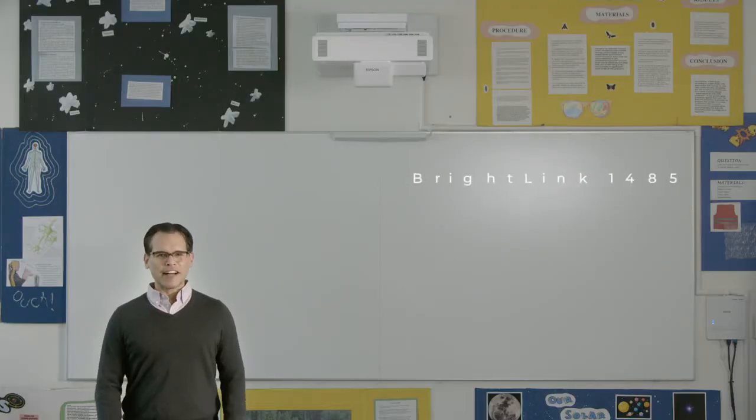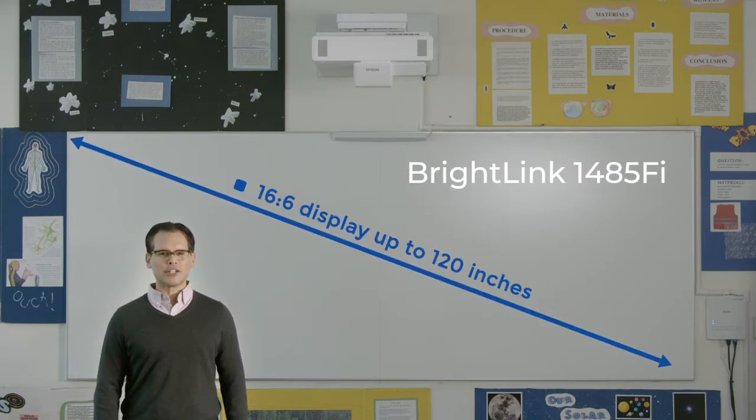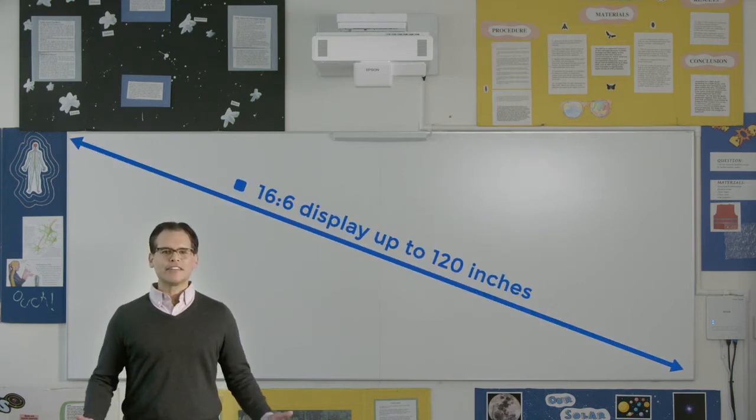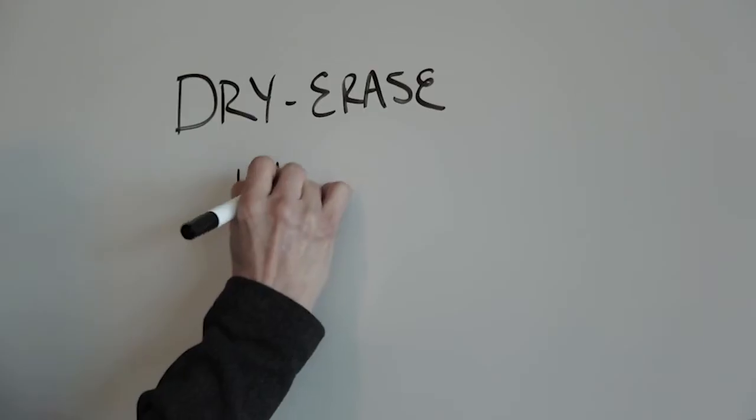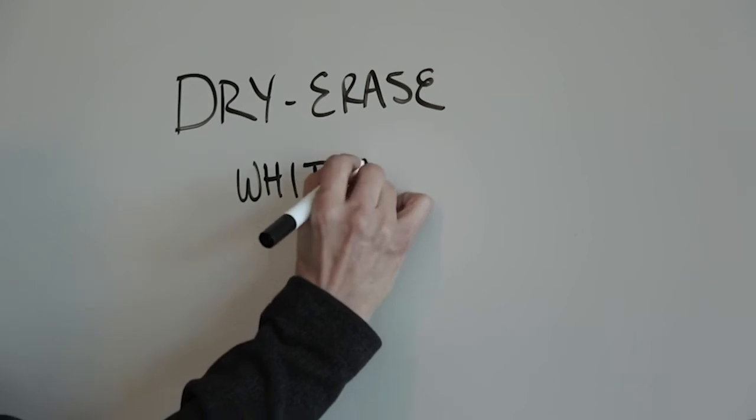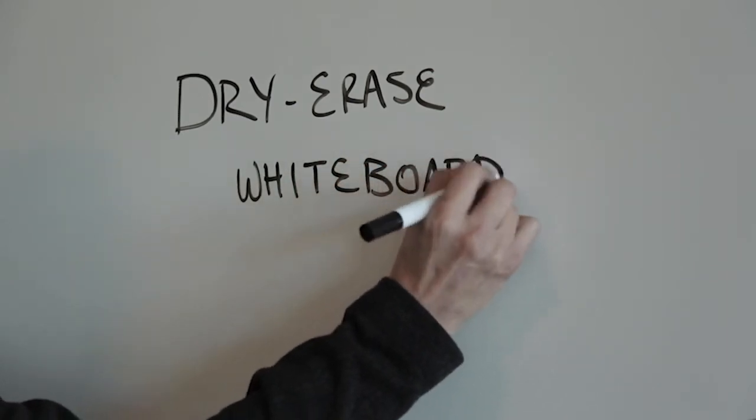The BrightLink 1485 Fi can also support a massive 16 by 6 display up to 120 inches. At over 9 feet wide, this is nearly two times the display area of a 75 inch flat panel. And because BrightLink displays can be used on a typical whiteboard, you don't lose valuable classroom space when the display is not in use.